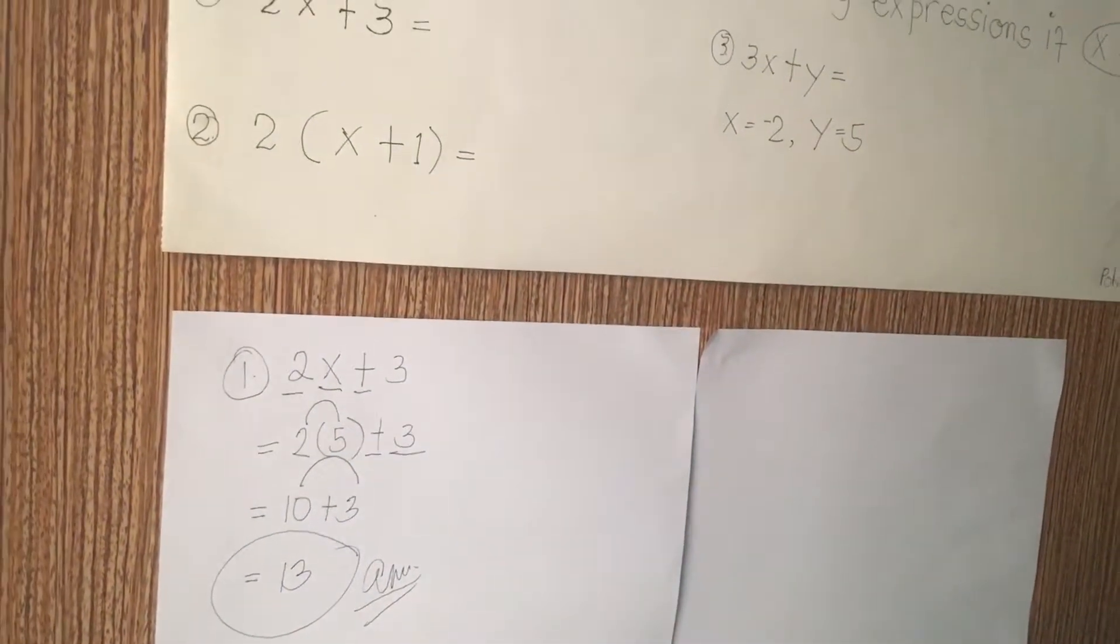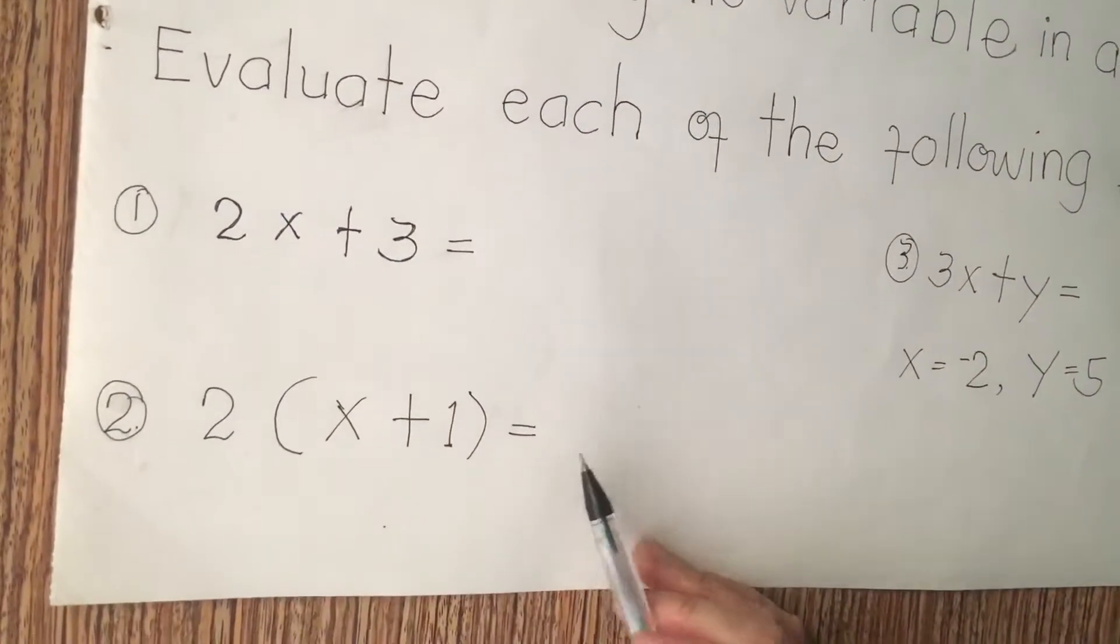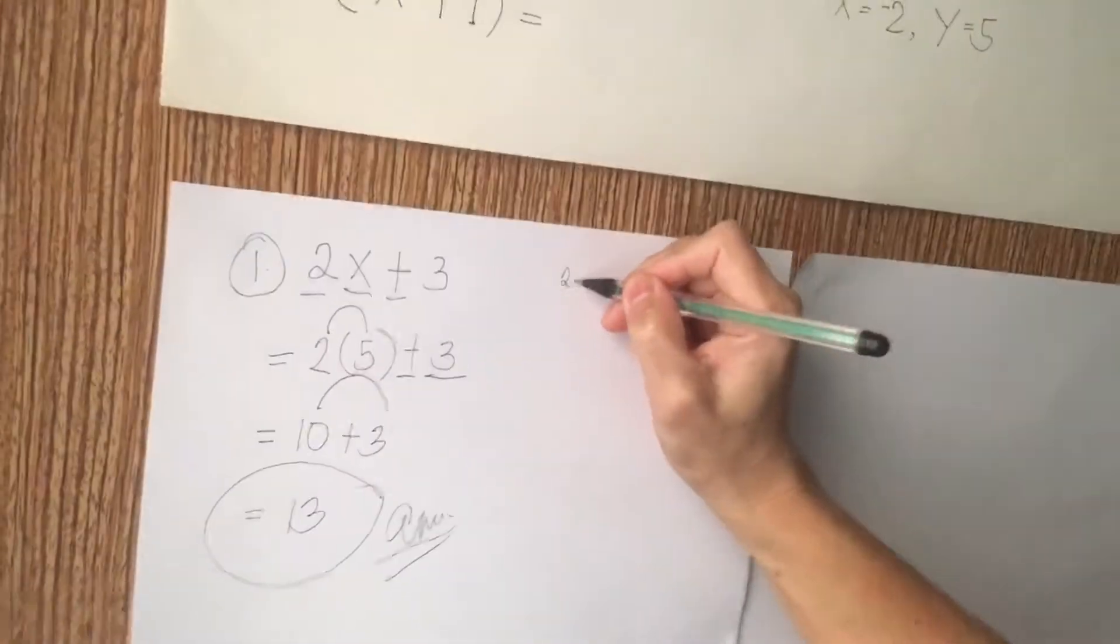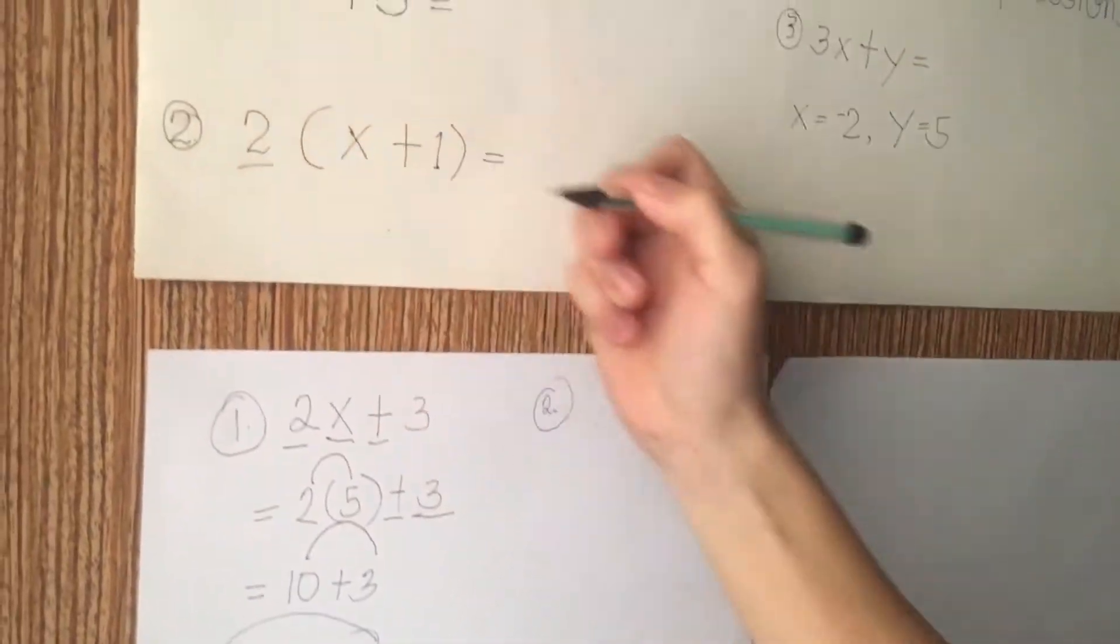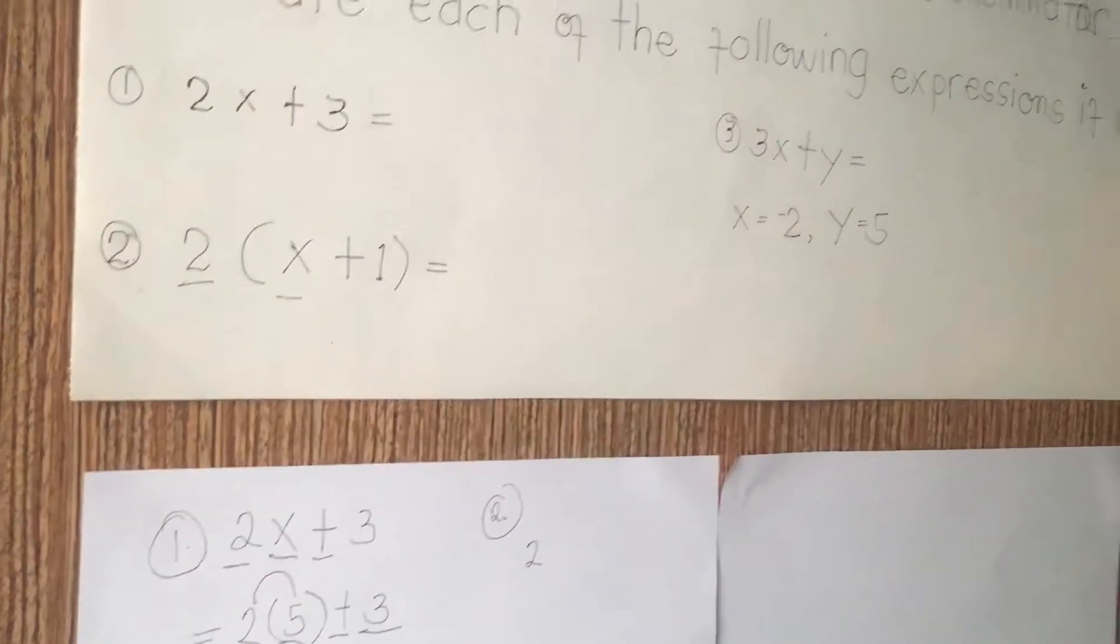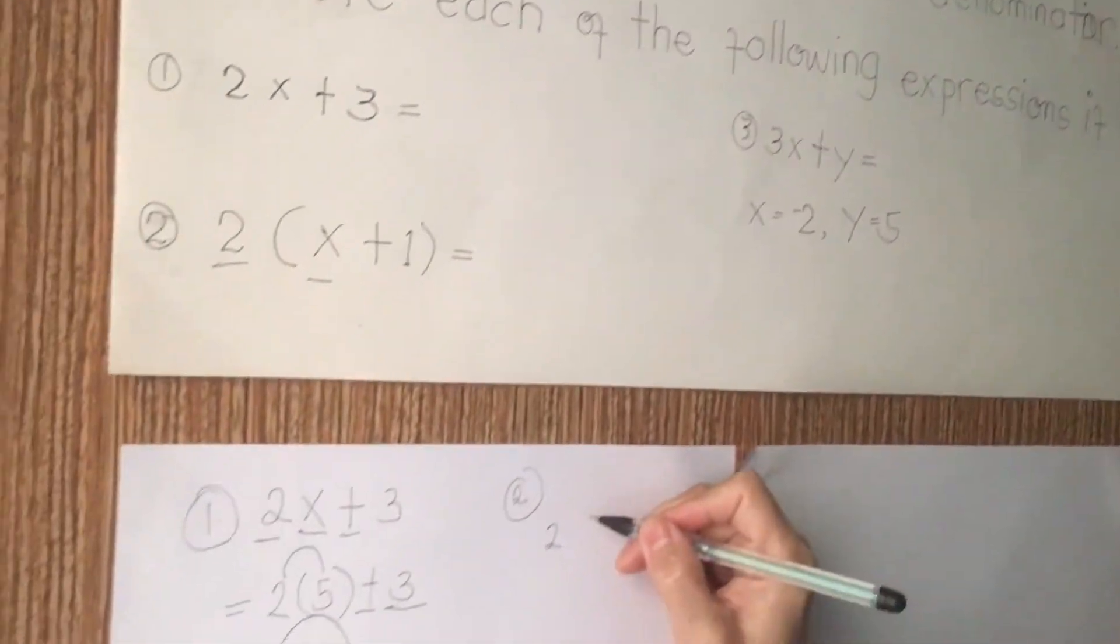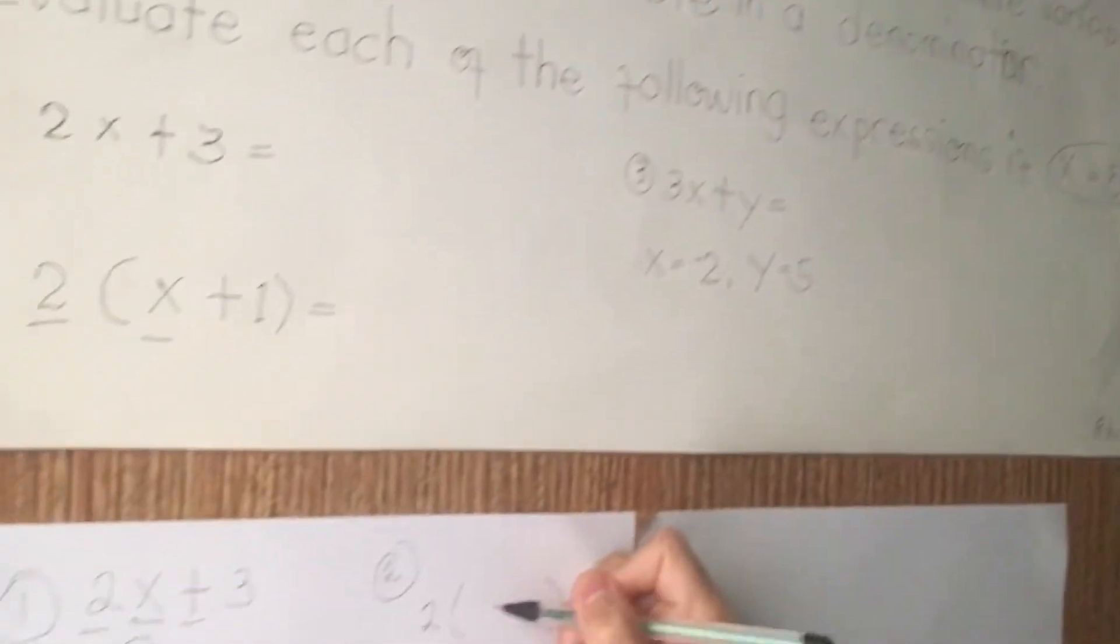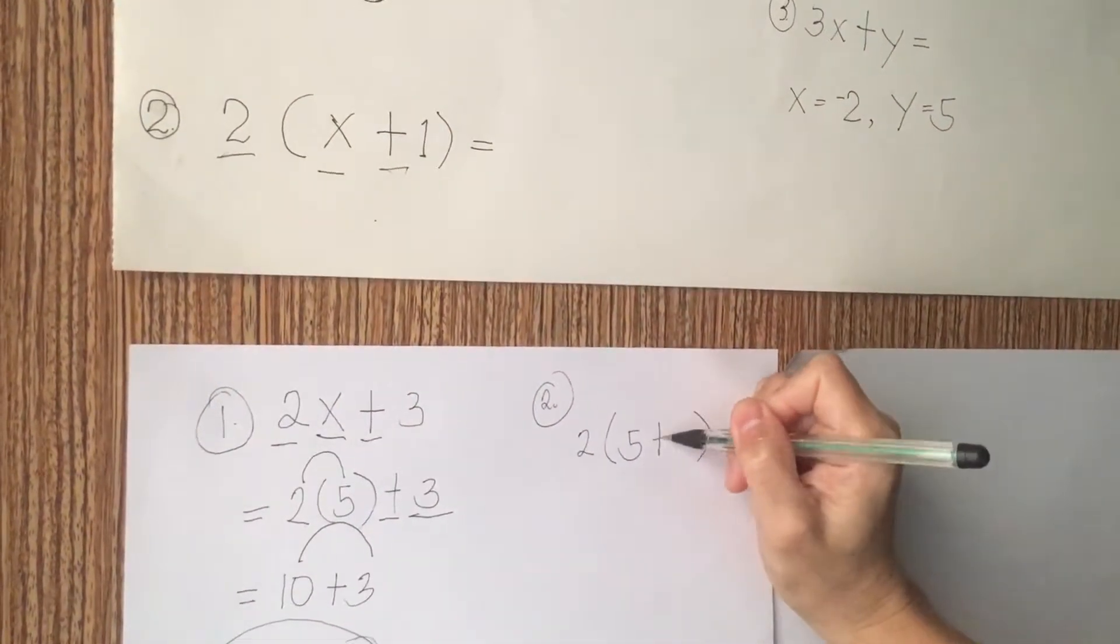Now, we are going to proceed to number 2. We have 2(x+1) in close parenthesis. I'm going to solve it. Same procedure. I'm going to write here 2. Then, the value of x. We have 5. Because equations 1 and 2, the value is x equals 5. So, again, open parenthesis. We have the value of x. It's 5.